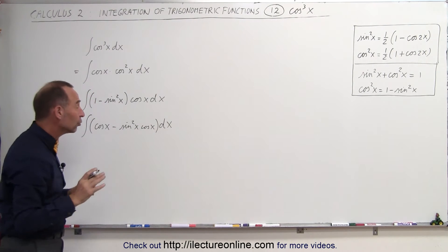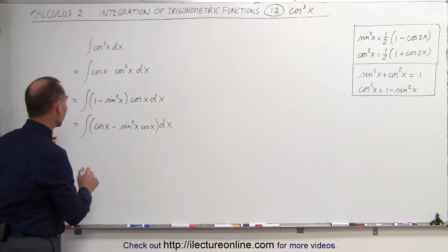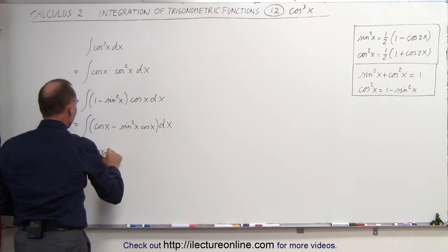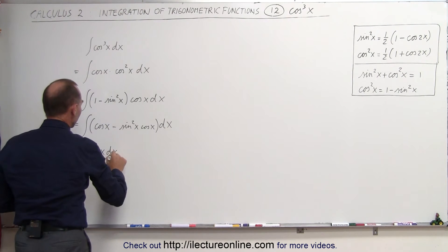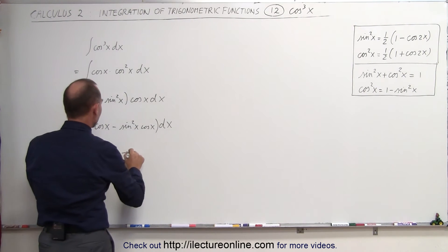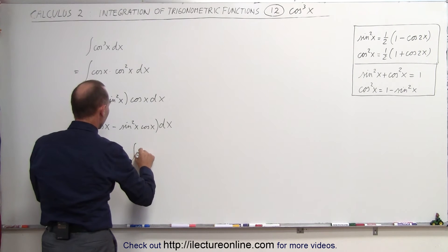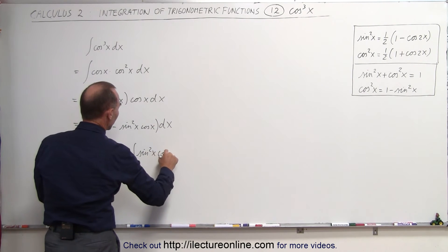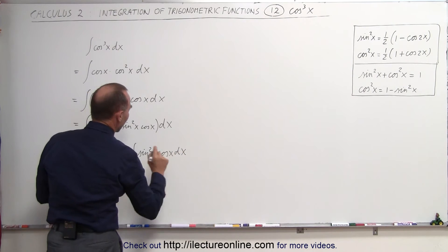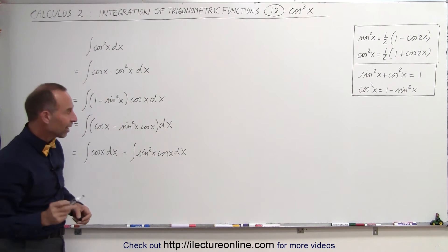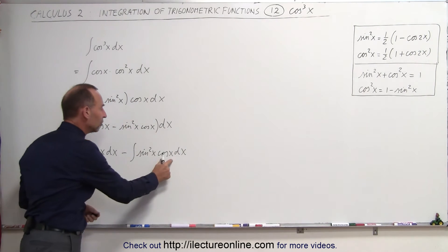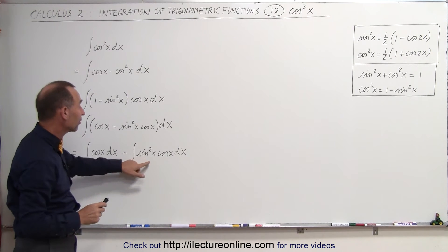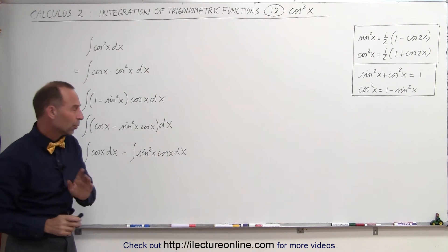Now I can write it as two separate integrals. This is equal to the first integral, which is the cosine of x dx — which is easy to integrate — minus the integral of the sine square of x times the cosine of x dx. Notice that the derivative of the sine of x is the cosine of x, so therefore the differential of the sine of x is the cosine of x dx.